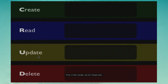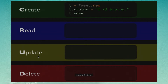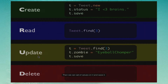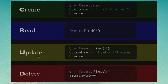For Create, we do Tweet.new, then set the status and call t.save to save the item. For Reading, we do Tweet.find(3), just like you saw a moment ago. For Updating, we find the tweet, set values on it, and save it. And for Delete, we find the tweet and call t.destroy to delete it out of the database.